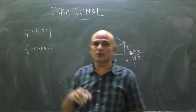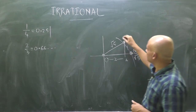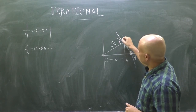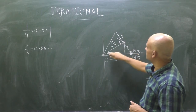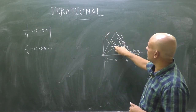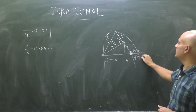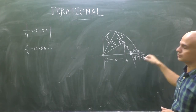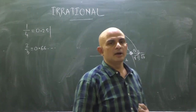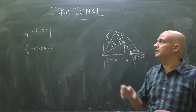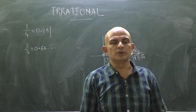Likewise, if you wish to mark root 6 on the line, use a right triangle, take the perpendicular as 1 centimeter, and apply Pythagoras theorem. You get root 5 squared plus 1 squared equals 5 plus 1 equals 6, so draw a circle and that point will be root 6. Similarly for root 7, root 8, root 9 and so on — you can use the same procedure. This procedure of locating an irrational number on the real line is called the spiral procedure.